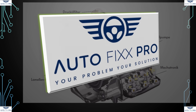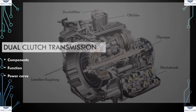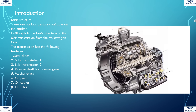Today's topic is the dual-clutch transmission: its components, function, and power curve. This video covers the basic structure, components, and power curve using the example of the six-speed dual-clutch transmission launched by the Volkswagen Group in 2003. It was the first dual-clutch transmission to be used in large-scale production. Today there are different versions of dual-clutch transmissions; however, the basic principle always remains the same.